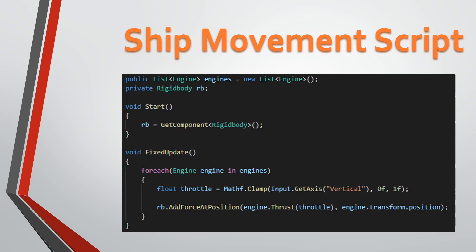Let's go back into the ship movement script. What we're doing is declaring a public List of type Engine. If you see those angle brackets, that means we're using a list — it's a generic. With that generic, we're saying we want this to be an Engine. If you're not familiar with generics, they're a way of saying a variable could be anything, but it has to be strictly adhered to once it's set. So a list of engines will never be anything else once we declare it as that class.